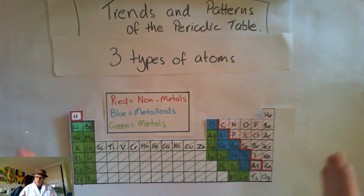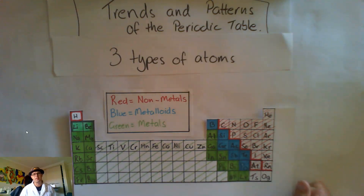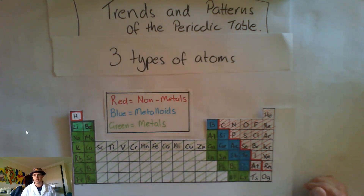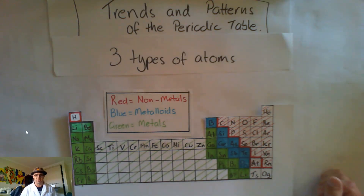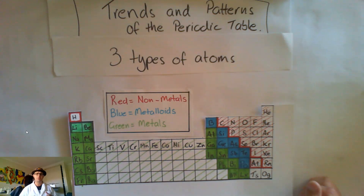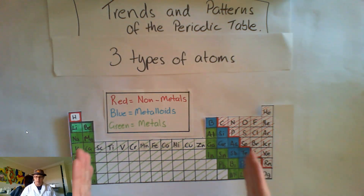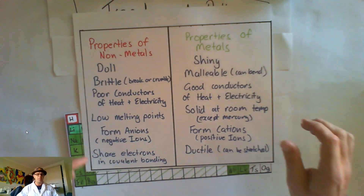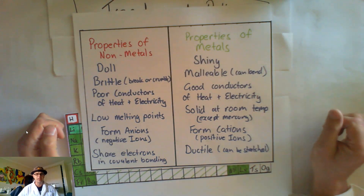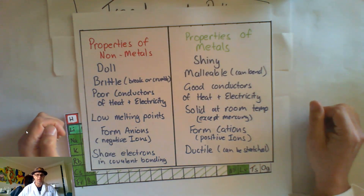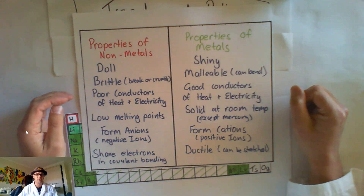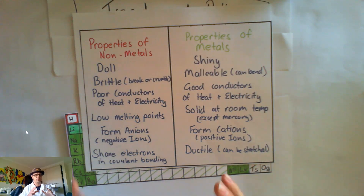So what's the difference between these things and why is the table broken up like this? When we're looking at the trends and patterns of the periodic table, we want to look at why the periodic table is shaped the way that it is. Let's have a look at some properties of non-metals. They're dull, which means they're not shiny. They're brittle — they break or crumble. They're poor conductors of heat and electricity, and that has to do with their electrons.